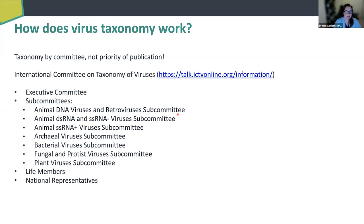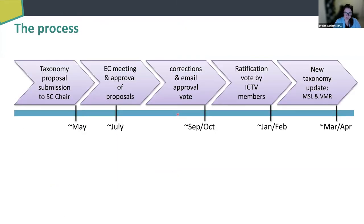There are also life members and national representatives that eventually vote on proposals. In essence, you submit taxonomy proposals to the relevant subcommittee chair. If it's a proposal about bacteriophages, you email it to me. If it's about plant viruses, you email it to somebody else. Usually there's a bit of back and forth involved, but the deadline is usually around May each year.